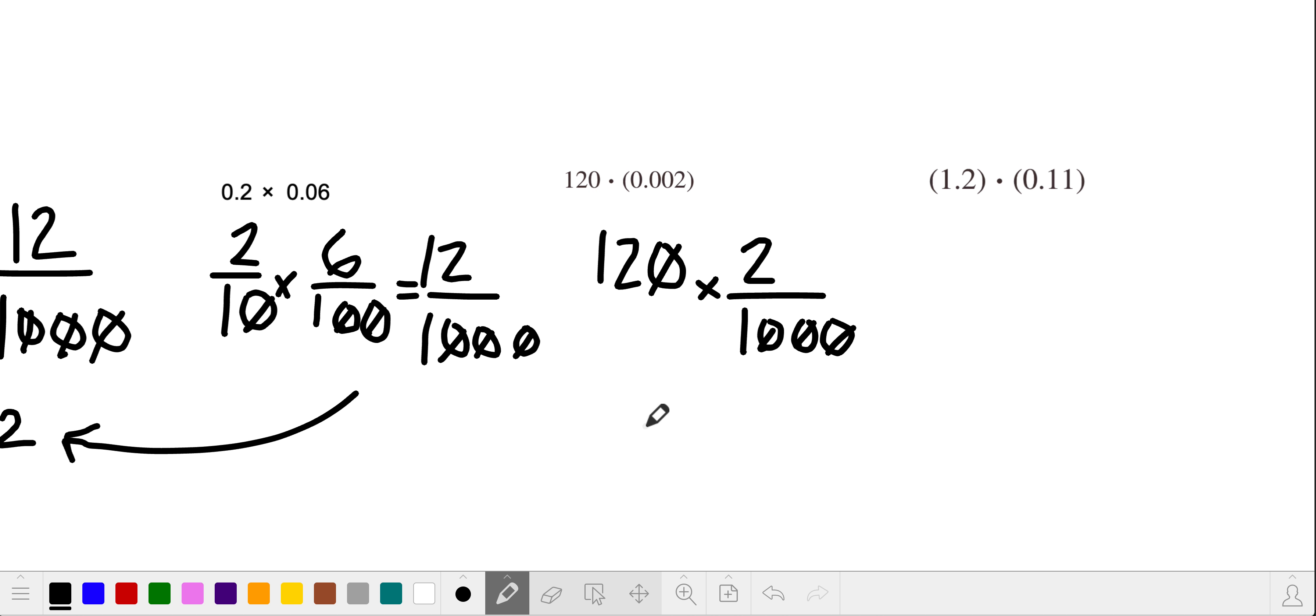So some of you like to put a 1 beneath the 120. You don't have to do that, but some of you do. If you multiply the numerators, you get 240, and then the denominator, you get 1,000. So when you read this properly, we would read this as 240 thousandths. And the way to write that as a decimal is 0.240, 240 thousandths. So not too bad.